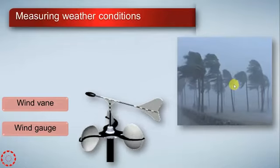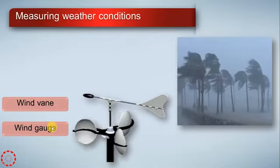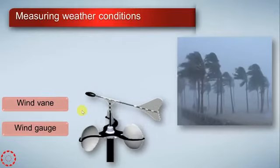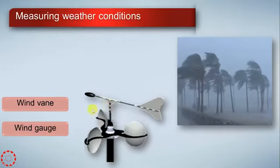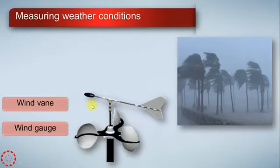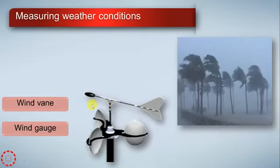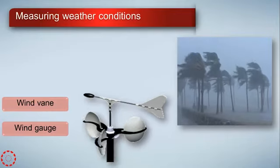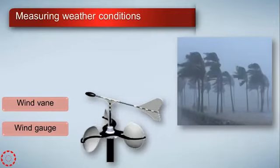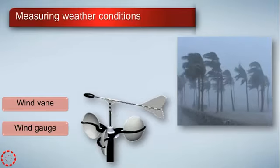This weather is windy. For measuring weather conditions for wind, we use a wind vane. The wind vane tells us the direction of the wind — which direction it comes from and where it goes.